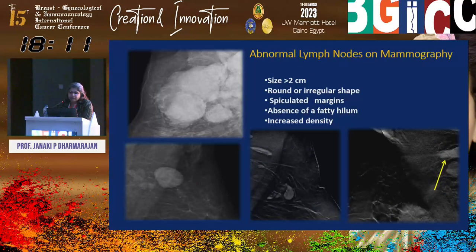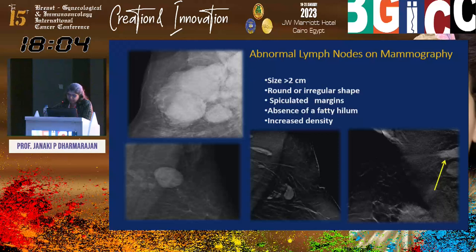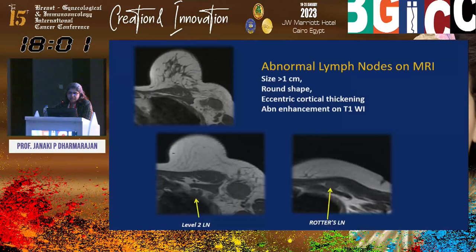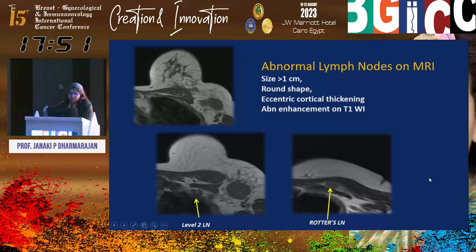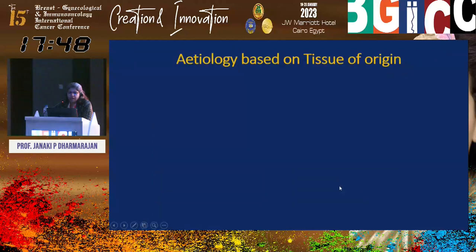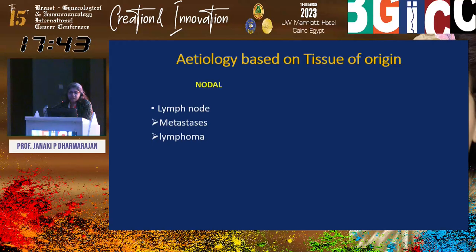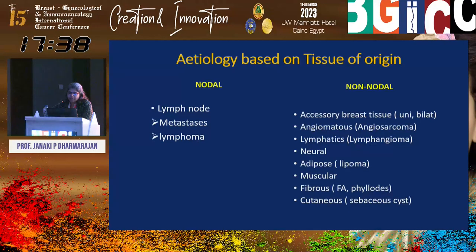Abnormal lymph nodes on mammography are more than 2 cm, can be round or irregular with spiculated margins, and fatty hilum may be absent. On MRI, short axis dimension more than 1 cm, round shape, eccentric cortical thickening, and abnormal enhancement are criteria. Etiology based on tissue of origin: nodal — metastasis or lymphoma; non-nodal — various other causes to be discussed in detail.